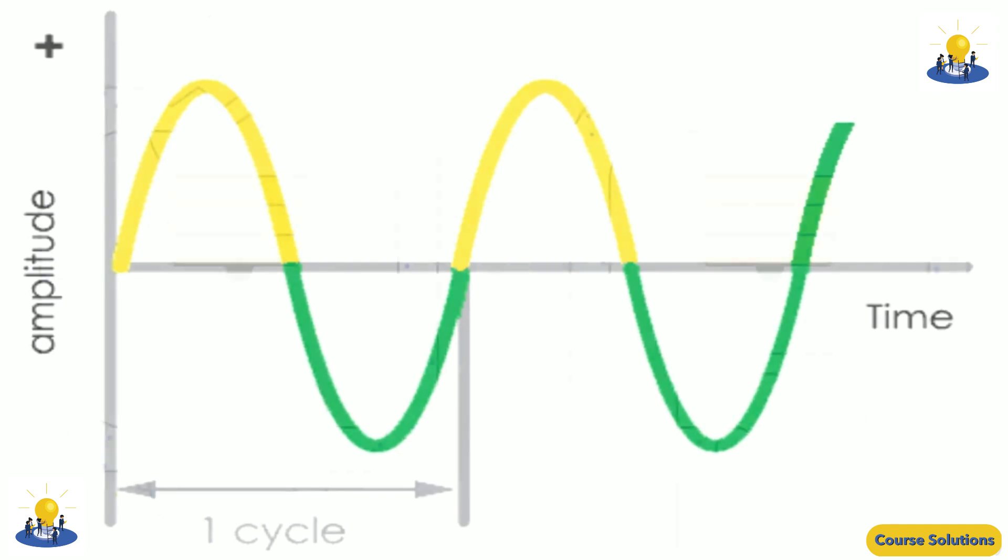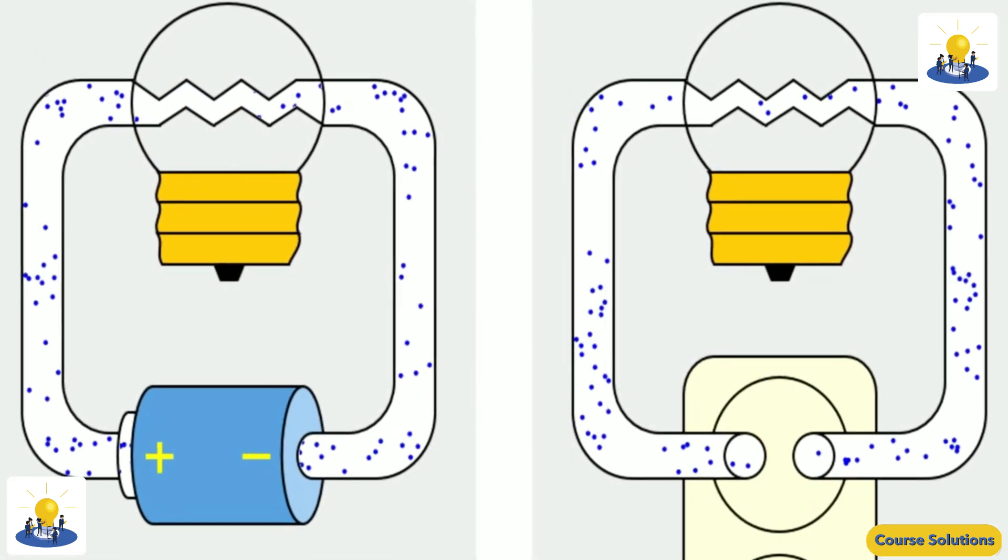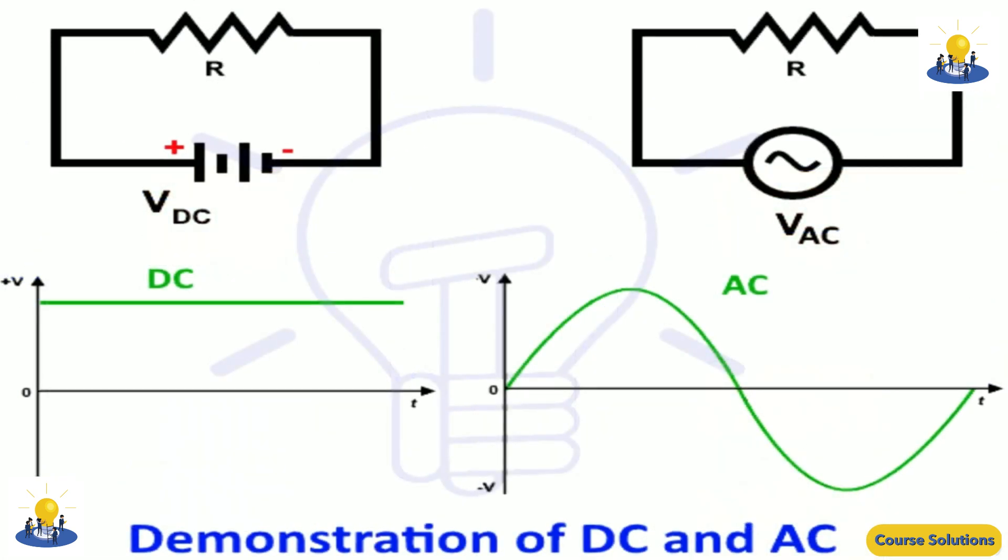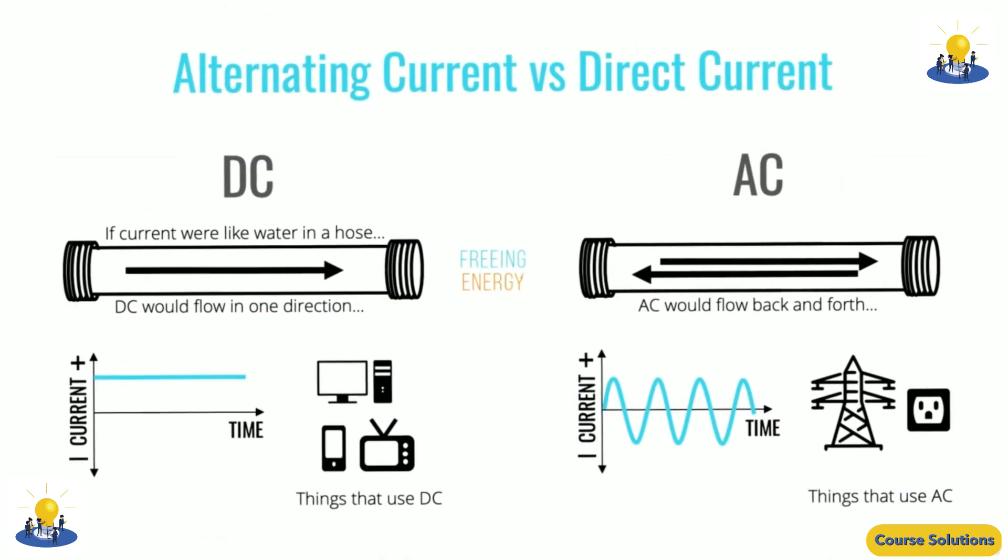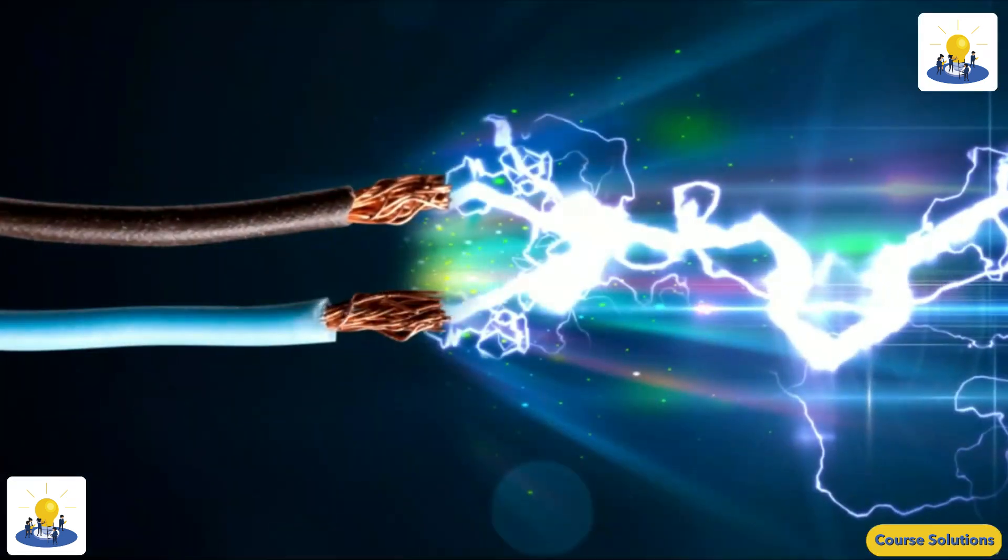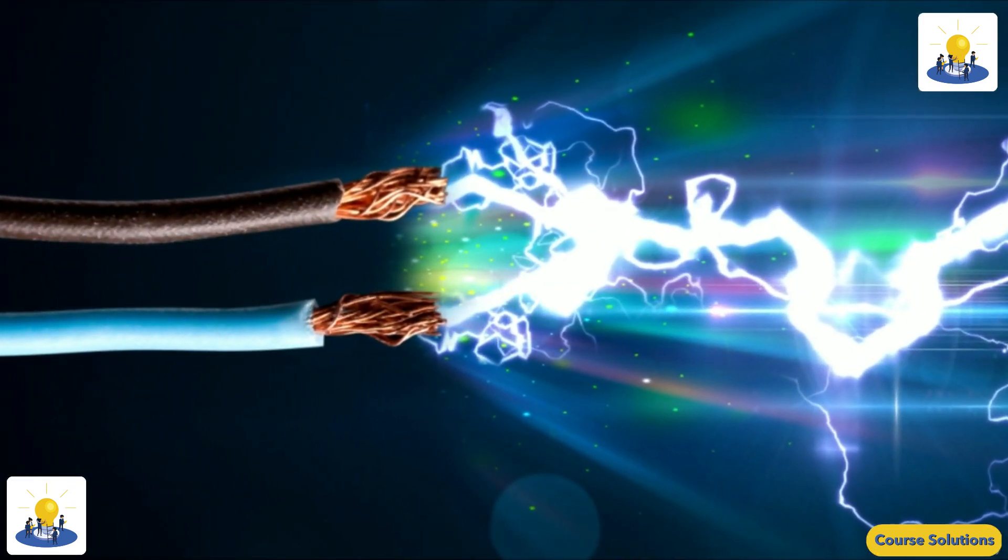The interval of time between the attainment of a definite value on two successive cycles is called the period, the number of cycles or periods per second is the frequency, and the maximum value in either direction is the amplitude of the alternating current.